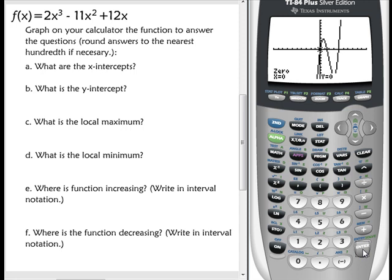So my first x-intercept is 0, 0. So I'm going to write that in here. And you want to write it as an ordered pair.